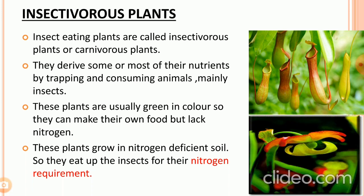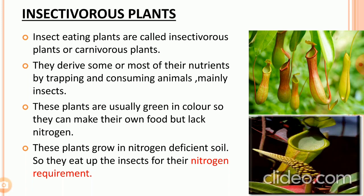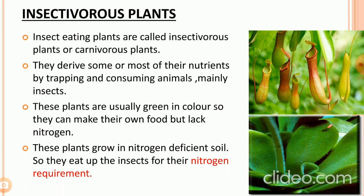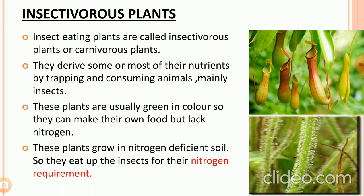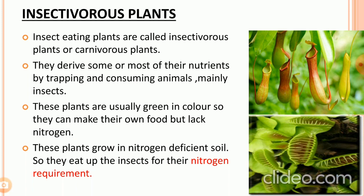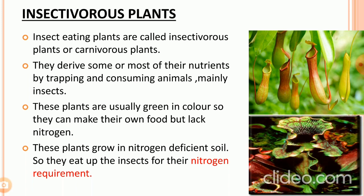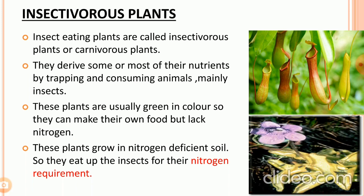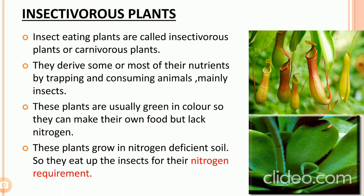Next, we have insectivorous plants, also called carnivorous plants. They derive some or most of their nutrients by trapping and consuming animals, mainly insects. These plants are usually green in color so they can make their own food, but they lack nitrogen. These plants grow in nitrogen-deficient soil, so they eat insects for their nitrogen requirement.